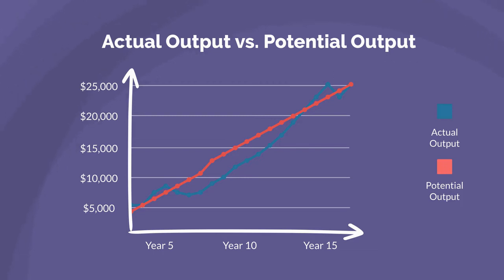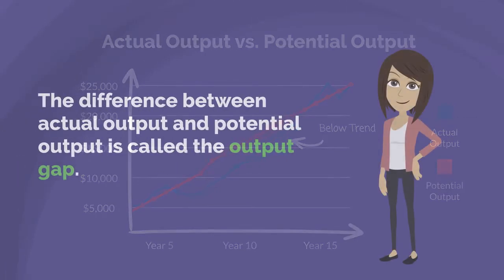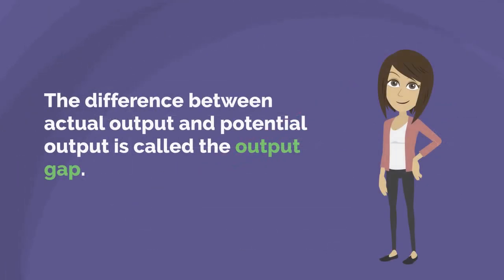It is far more common for actual output to be lower than potential output, or below trend. The difference between actual output and potential output is called the output gap.